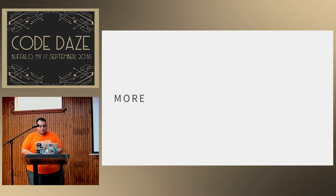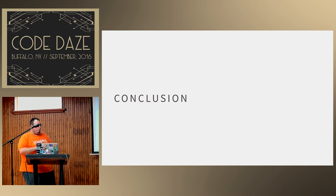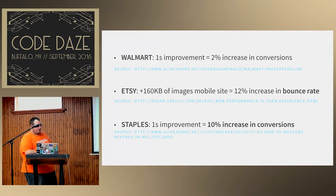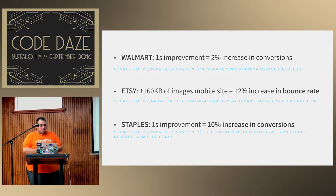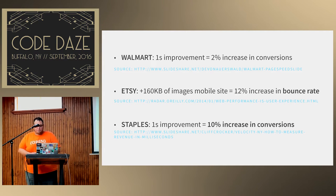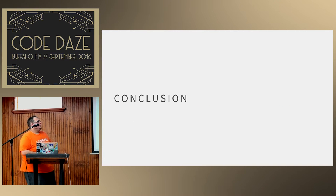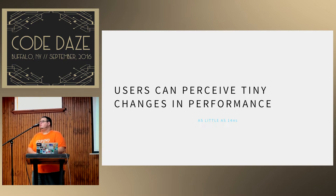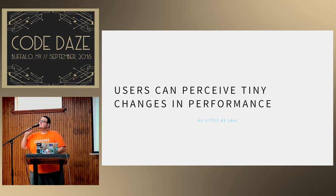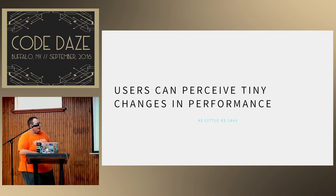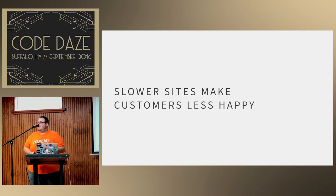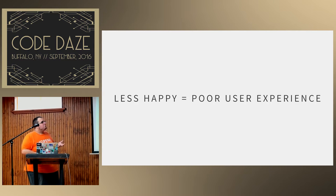Some other case studies: Walmart found a 1-second improvement led to a 2% increase in conversions. Etsy found that by adding 160 kilobytes of additional imagery, they had a 12% increase in bounce rate — that's people coming in and immediately leaving. And Staples found a 1% improvement led to a 10% increase in conversions. What we can conclude is that users can perceive tiny changes in performance — as little as 14 milliseconds — and slower sites make customers less happy.